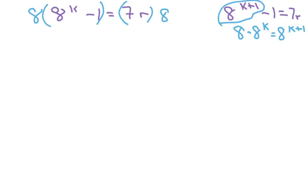So I'm going to distribute here and I get 8 times 8 to the k minus 8 equals 56r.